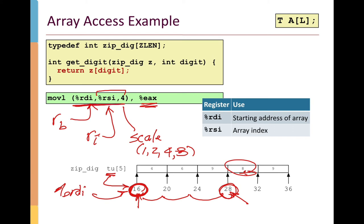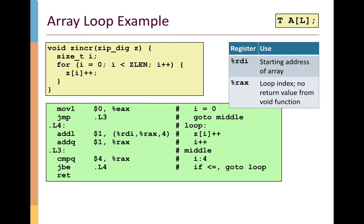This addressing mode is built specifically to make array access easy. The very common pattern is: the base register holds the beginning of the array corresponding to z, the index register holds the index value from 0 to ZLEN-1, and the scale factor is the size of each element — 4 for integers. If we had defined zipdig as type long, the compiler would generate 8 here instead, since each long occupies 8 bytes, skipping forward by 8 rather than 4.